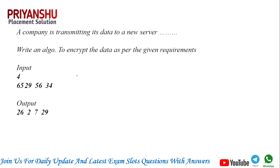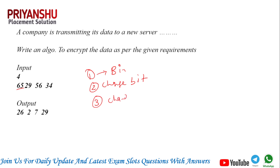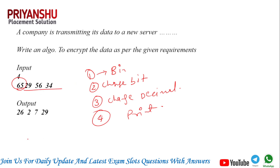Basically, in short, what we need to do in this question: step one, convert the number to binary; step two, change the bits; step three, convert the changed binary back to decimal. You need to do this for every single array element.